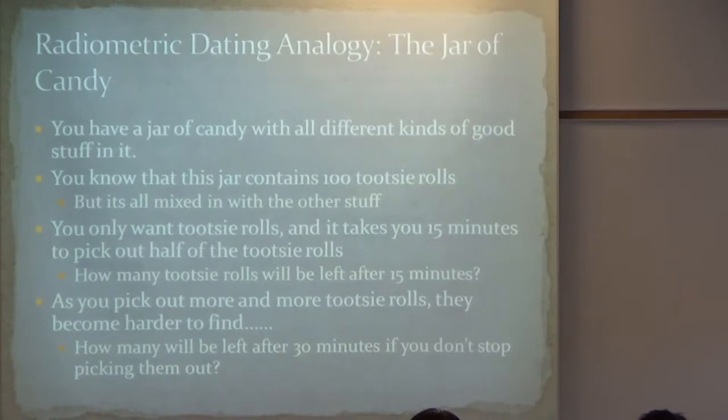So as you pick the Tootsie Rolls out of the jar, they become harder and harder to find. If you start with 100, how many will be left after 30 minutes? It takes you 15 minutes to pick out half of them. 25. It takes you 15 minutes to pick out the first 50. Then they become harder and harder to find. So it takes you a little bit longer to pick out another half of them. So it takes you 30 minutes. And after 30 minutes, you're going to have 25 Tootsie Rolls left in the jar.